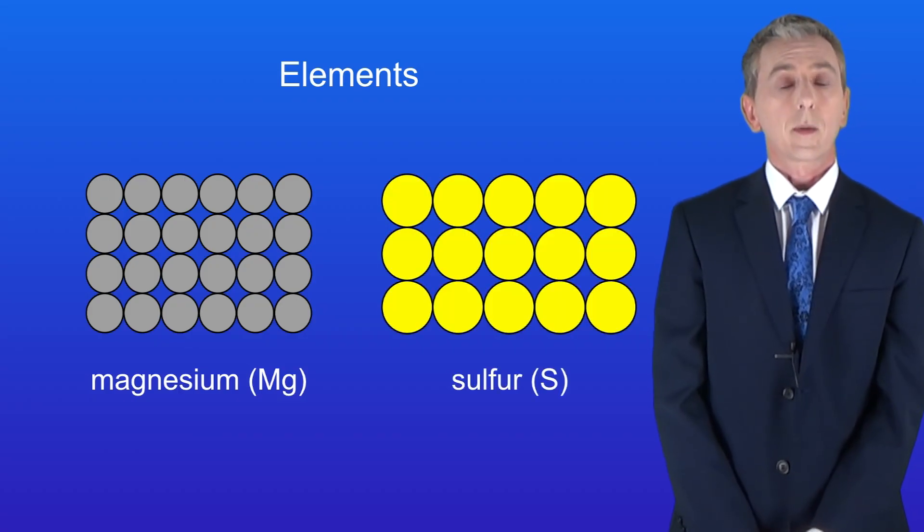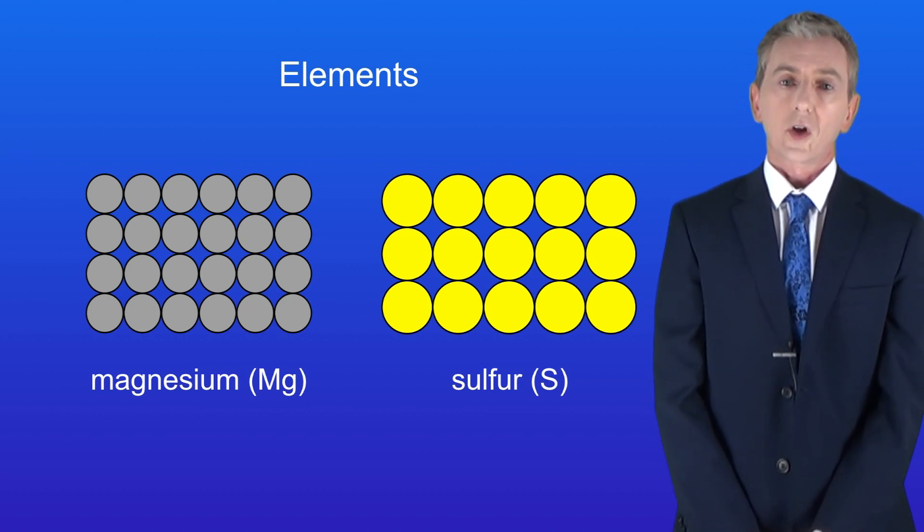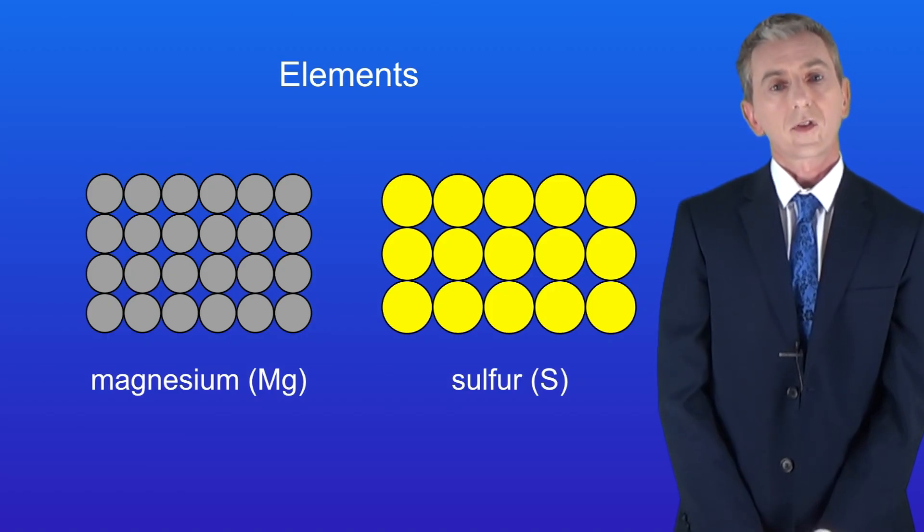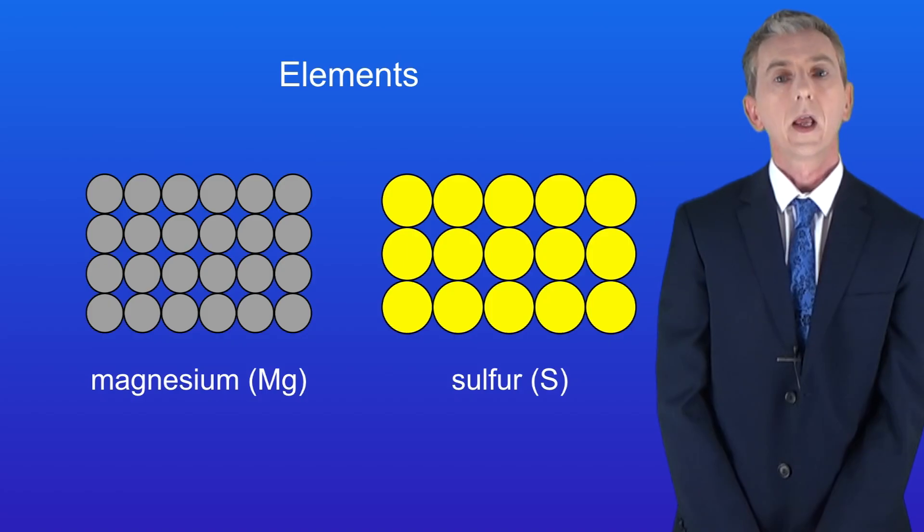Here are the atoms in a sample of sulfur and again all the sulfur atoms are the same. Each element has a symbol and every symbol starts with a capital letter. So the symbol for magnesium is capital M followed by a lowercase g. The symbol for sulfur is simply capital S.